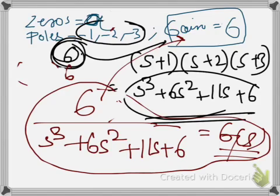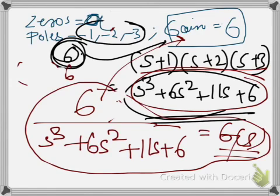You have poles minus 1, minus 2, and minus 3, so the denominator is (s+1)(s+2)(s+3), which simplifies to s³+6s²+11s+6. So the transfer function is G(s) = 6 divided by (s³+6s²+11s+6). This is the way in which you obtain a transfer function from zeros, poles, and gain.